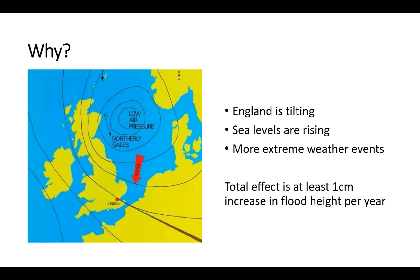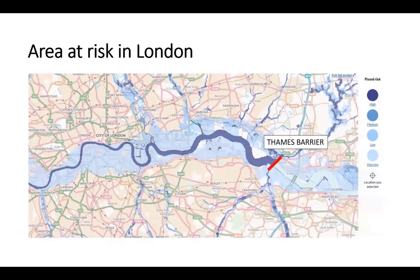It is getting worse. England is tilting slowly — what happened in the last ice age was that Scotland dropped under the weight of the ice, and the British Isles are slowly recovering, tilting about an axis roughly between the Wash and the Severn Estuary. Sea levels are rising, partly associated with climate warming, and we're seeing more extreme events. The total effect is to increase the severity of potential floods in London by around one centimetre per year — extremely fast in geological terms. Something like 48 square miles of London are at risk.